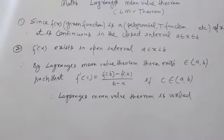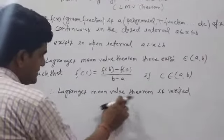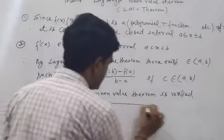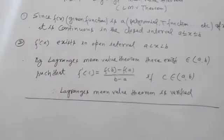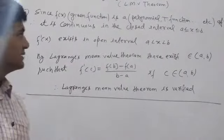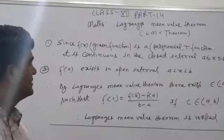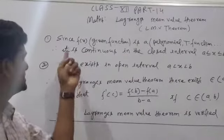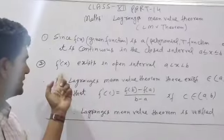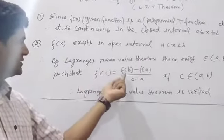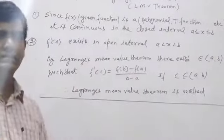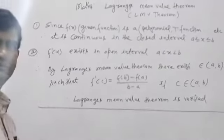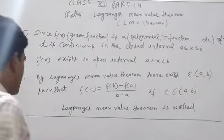Therefore, Lagrange Mean Value Theorem is very clear. This is the condition — how we can prove the Lagrange Mean Value Theorem with the help of these two points. After that, f'(c) = [f(b) − f(a)] / (b − a). It was simple, and it is also simple. Now let's look at an example.